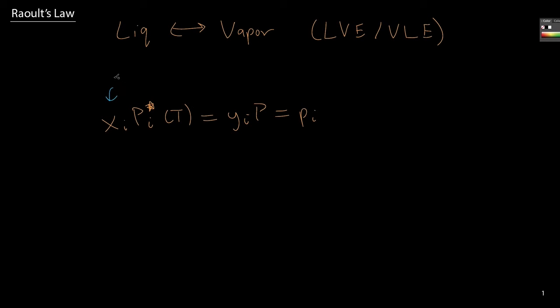So annotating this a little bit, this is the liquid mole fraction. P of I star is the vapor pressure, Y_I is the vapor mole fraction, P is the system pressure, and we can write this as partial pressure.